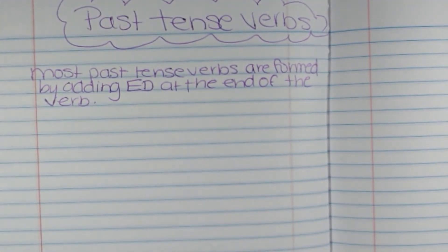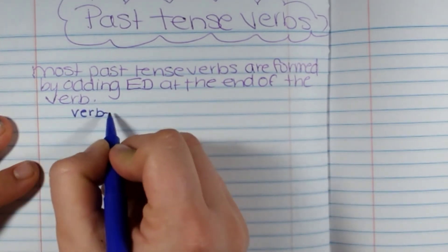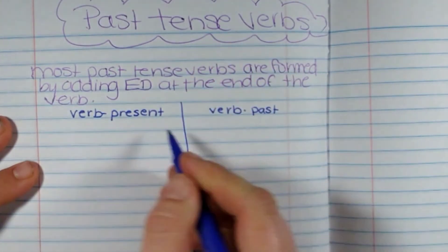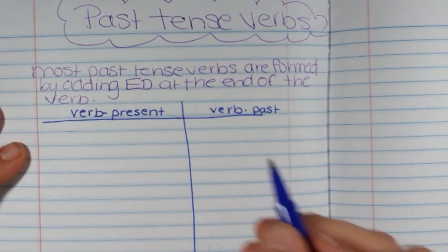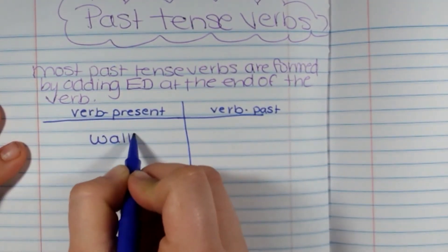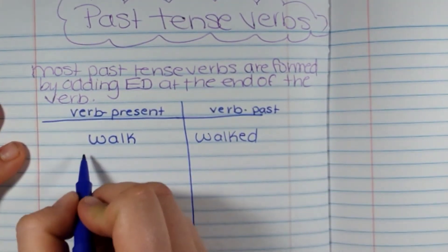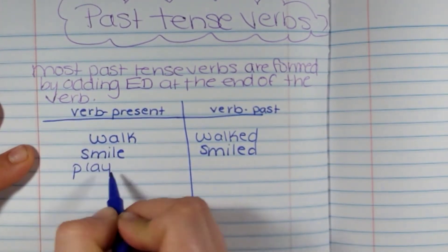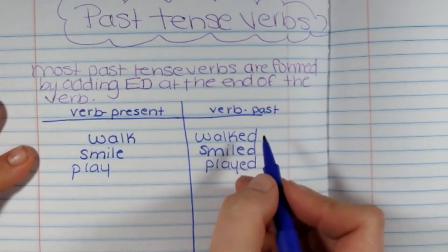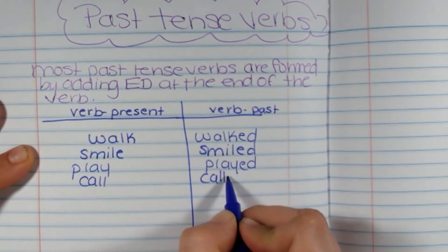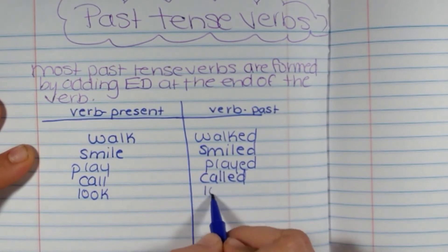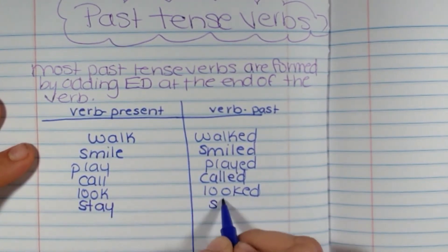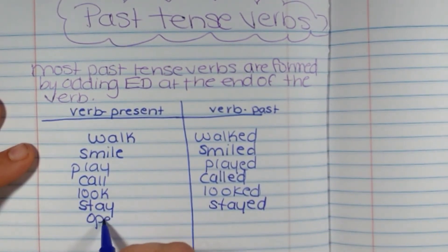I'm going to give you the present tense and the past tense. These are called regular verbs. Walk turns to walked. Smile turns to smiled. Play turns to played. You can see the pattern here. Call turns to called. Look is looked. Stay goes to stayed.